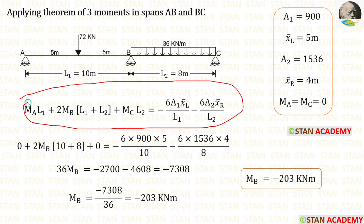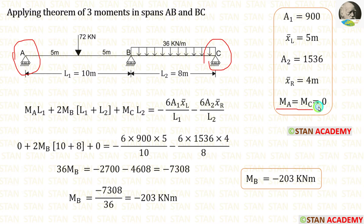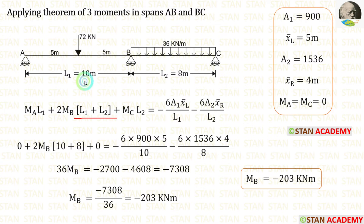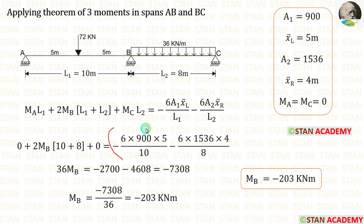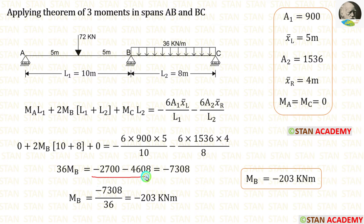Now we can apply all the values in the equation. Here we have one advantage: at point A and point C, there will be no moments because they are simply supported ends, so MA equals MC equals 0. L1 is 10 meters and L2 is 8 meters. 10 plus 8 is 18, and 18 into 2 gives 36. When we calculate, we are getting minus 2700 and minus 4608. When we add these two values, we are getting minus 7308. Finally, we are getting MB equal to minus 203 kNm.